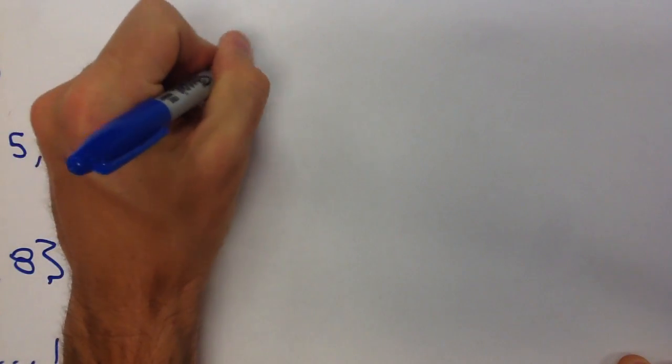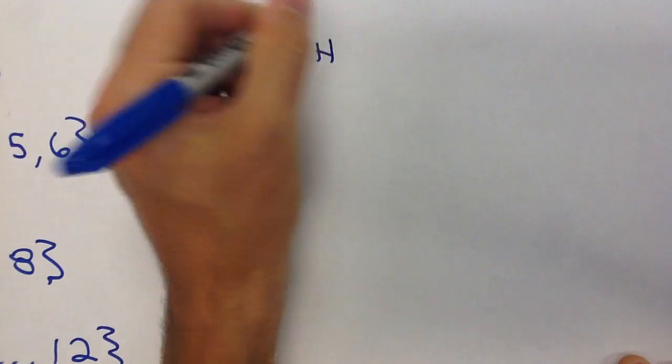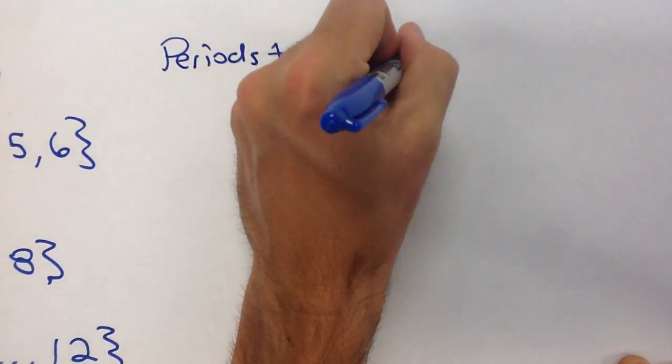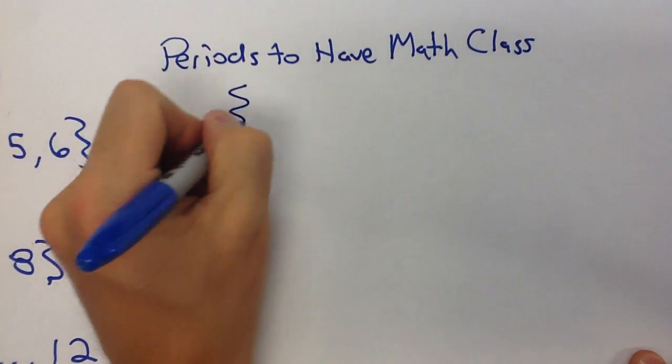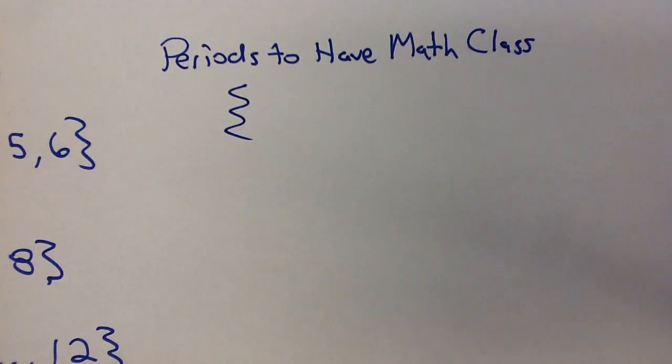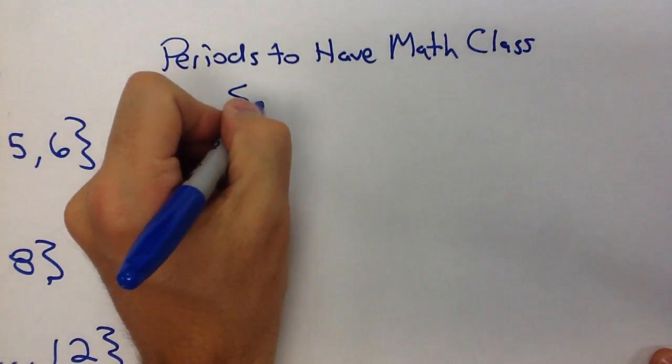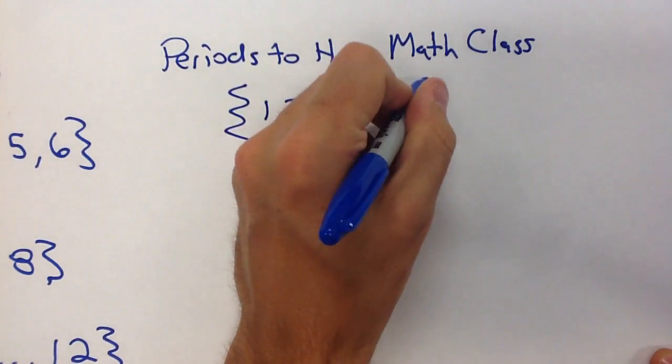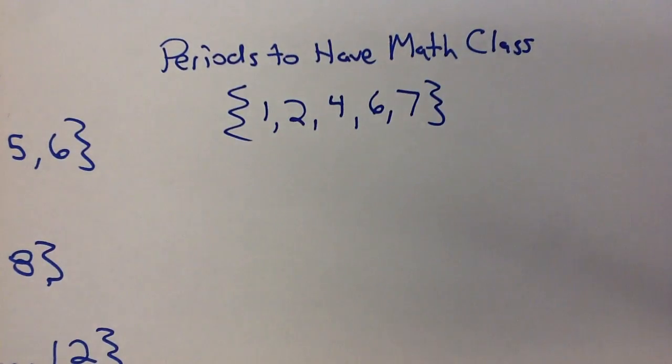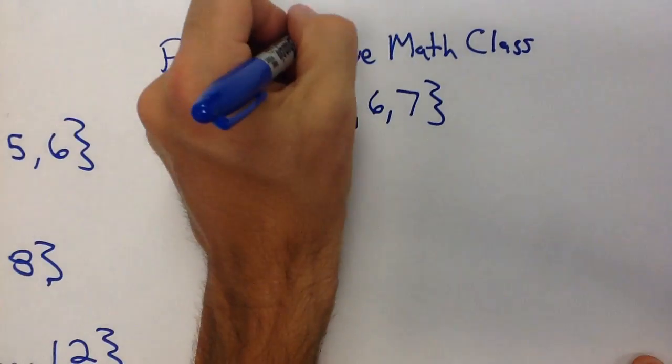If we talked about the periods to have math class, if you're one of my students, the sample space that you could have for a period to have math class would be first, second, fourth, sixth, seventh. Now, that's just if you're my student in my class.